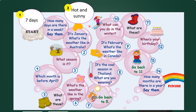Number three: look at this picture — what season is it? There are only four seasons in a year: spring, summer, autumn, or winter. In this picture, all the leaves have fallen down from the trees. So what is the season? It's autumn.